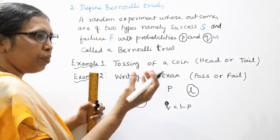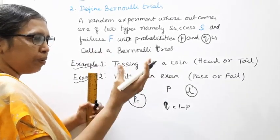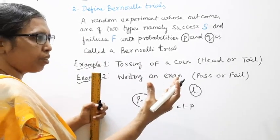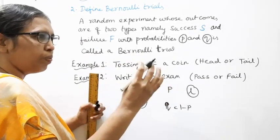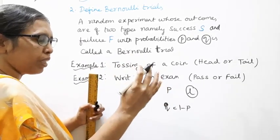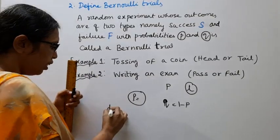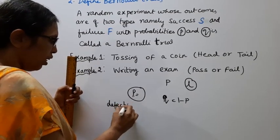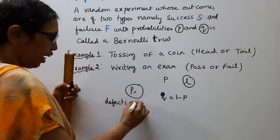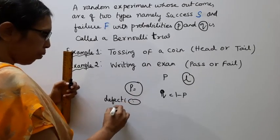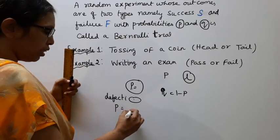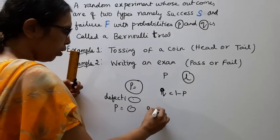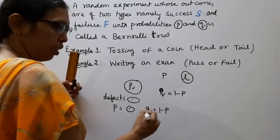Another example: a manufacturer produces bulbs that are defective and non-defective. Non-defective means good bulbs. Defective is not taken as P in this case. The Q is 1-P.